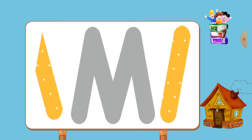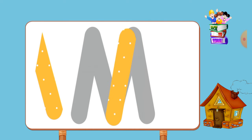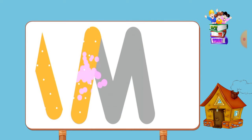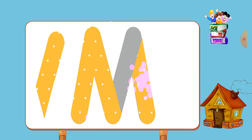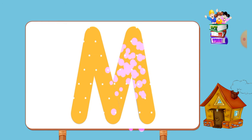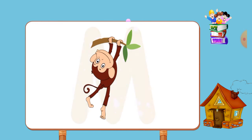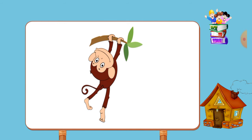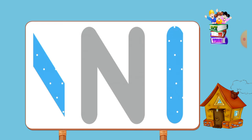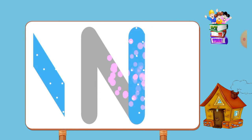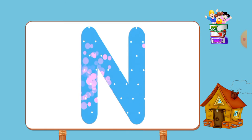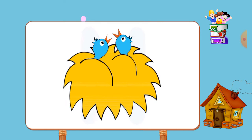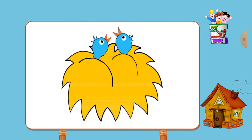Match the pictures to their shadows. M, m, monkey. Match the pictures to their shadows. N, n, nest.